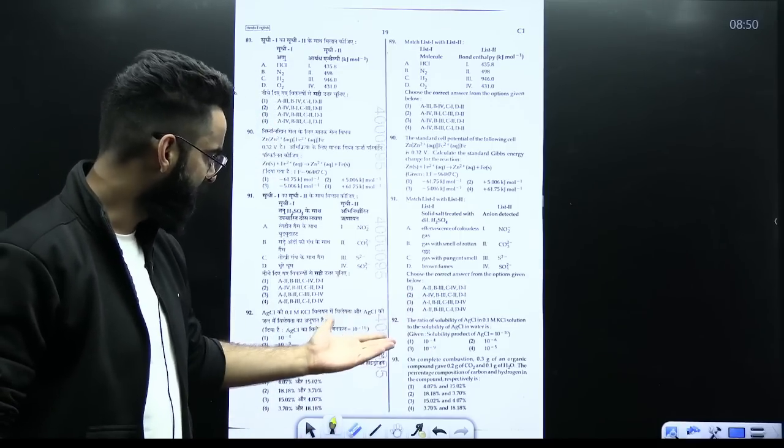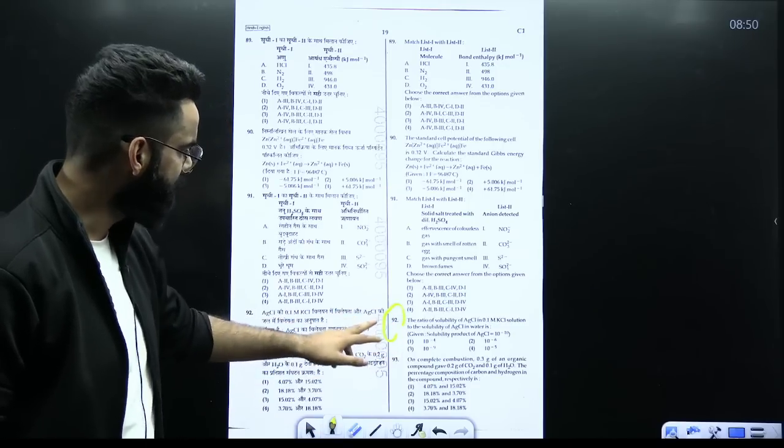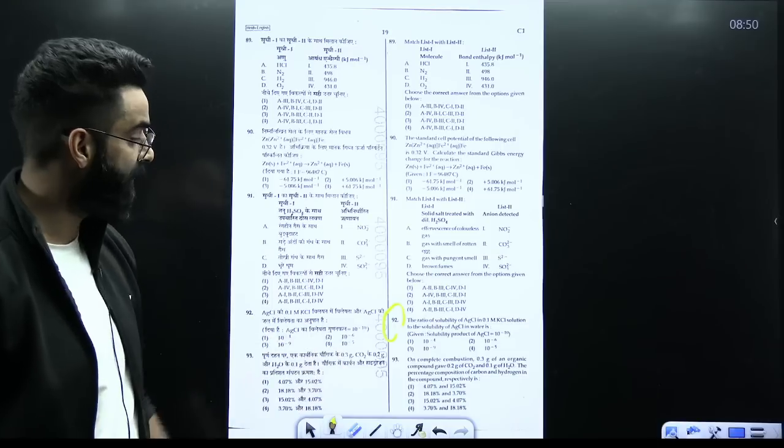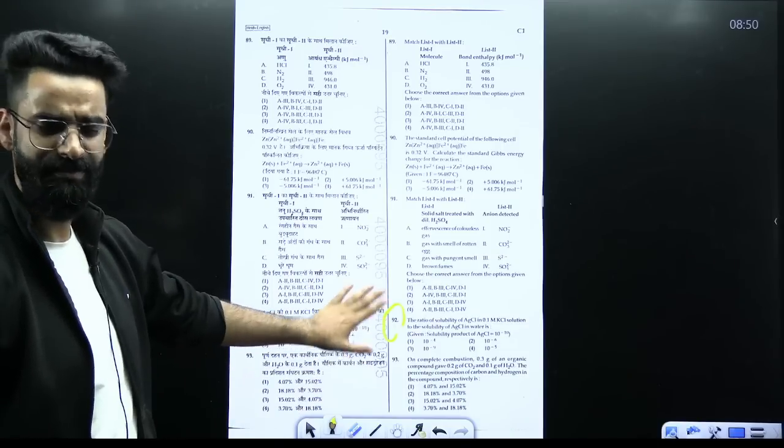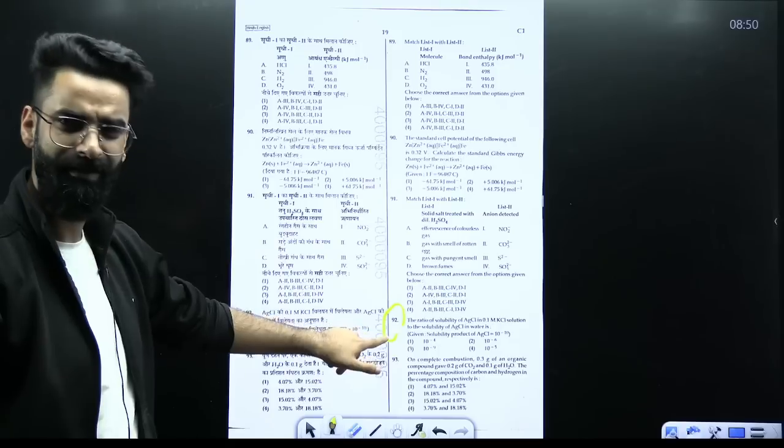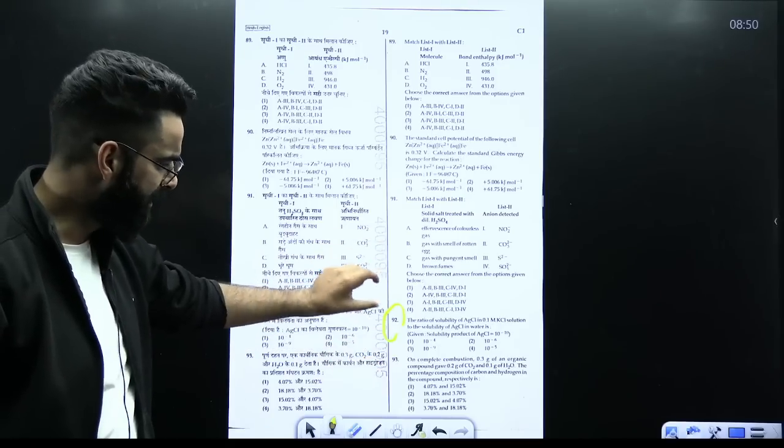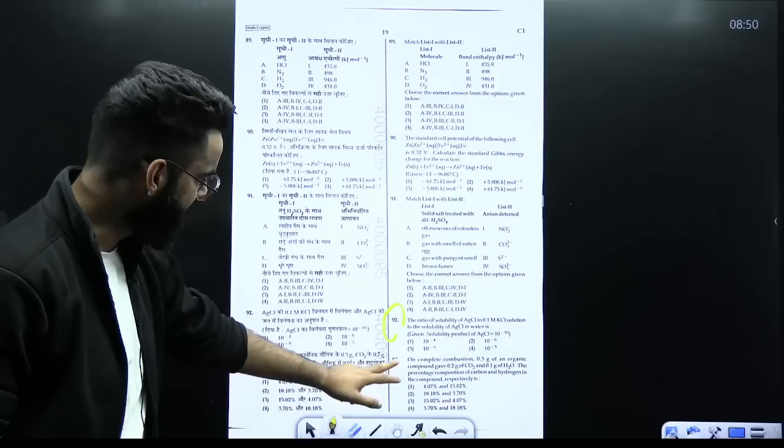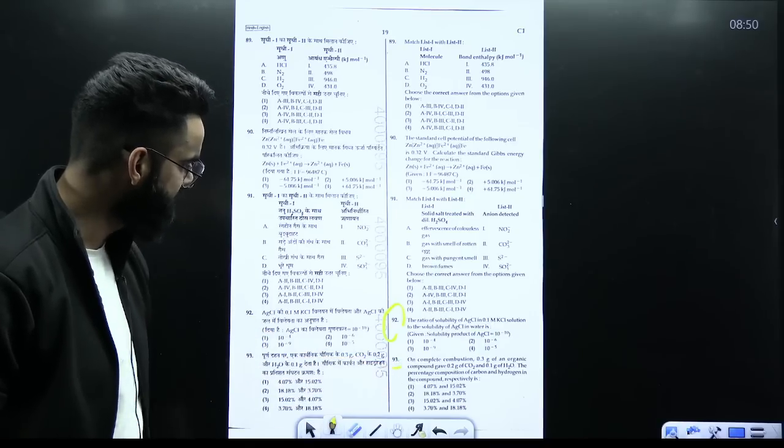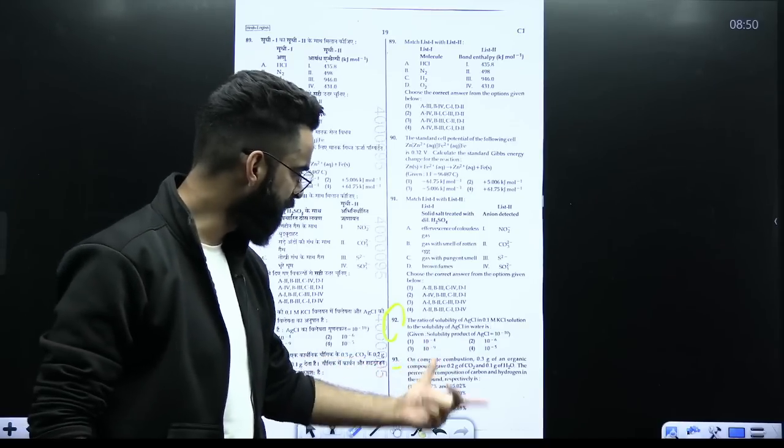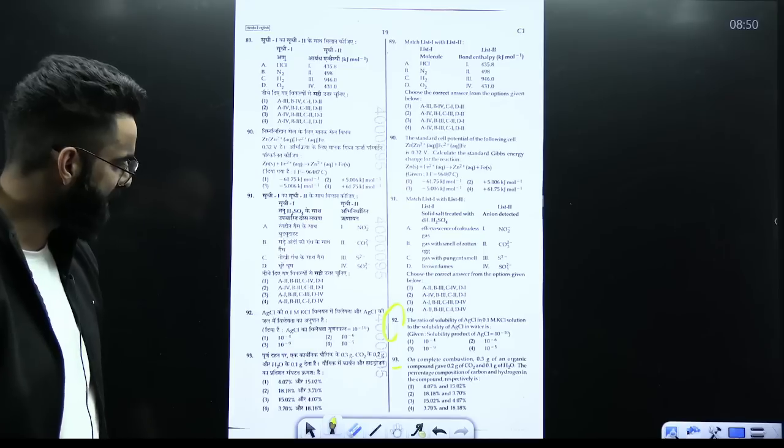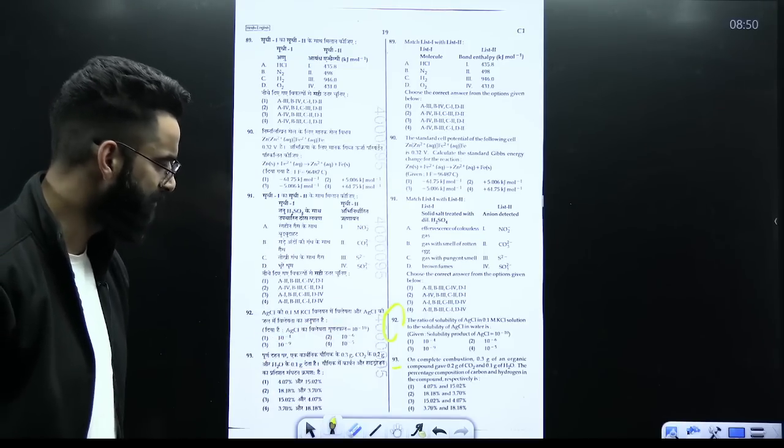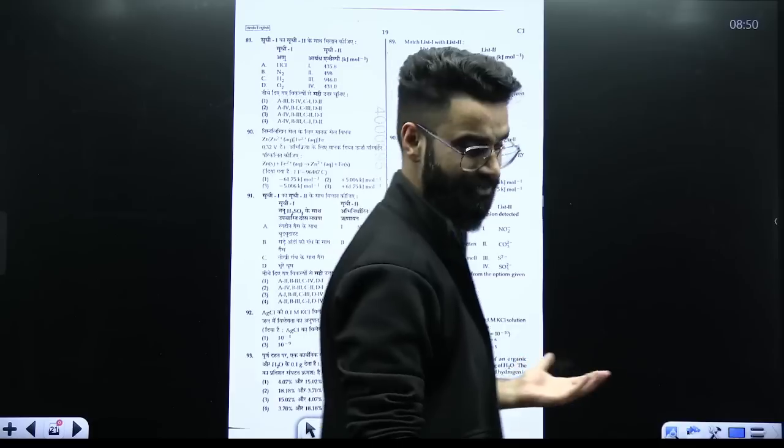Similarly guys, okay this question would have taken a bit of time. Again, the ratio of solubility of AgCl in 0.1 molar KCl solution to the solubility of AgCl in water. Question, simple question only, conceptual one but a good one. Okay? Simple, conceptual only but a good one as far as the NEET standard is concerned. Similarly, if you look at this question, it is from the chapter mole concept. On complete combustion, 0.3 grams of organic compound gives 0.2 grams carbon dioxide and 0.1 gram water. The percentage composition of carbon and hydrogen in the compound respectively is. Again, the basic question based on the combustion.